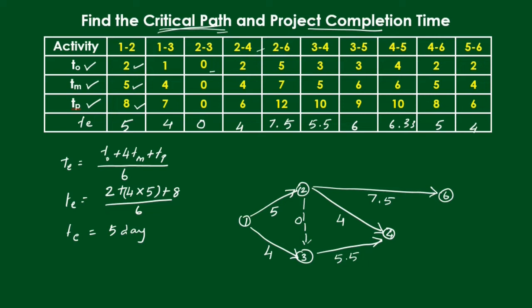Continuing the network diagram: 3-5 has value 6, 4-5 has value 6.33, 4-6 has duration 5, and 5-6 has duration 4. The network diagram is now complete.